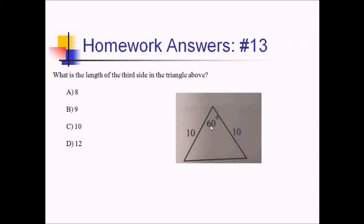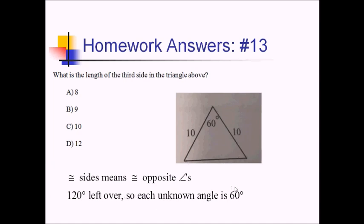Number 13 is a little tricky. We're given a 60-degree angle and these two sides of length 10. We're asked for the length of the third side. Since this is not a right angle, we can't just use Pythagorean theorem. The key is realizing this is an isosceles triangle — two sides are exactly the same, which means the angles across from them are also the same. We've used up 60 degrees; 180 minus 60 leaves 120 degrees for the two equal angles, so each is 60. With 60-60-60, we have an equilateral triangle, meaning all sides are equal — so the missing side is also 10. Choice C.